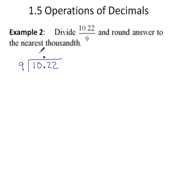9 into 1 won't go. 9 into 10 goes once. 1 times 9 is 9. 10 minus 9 is 1.